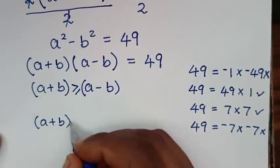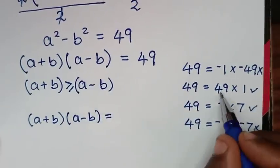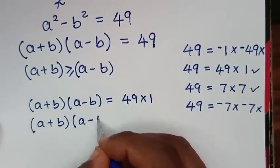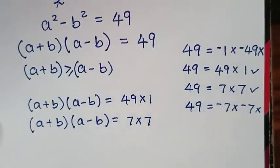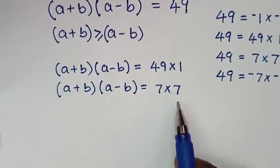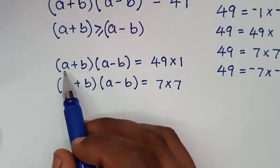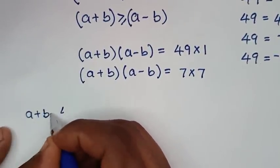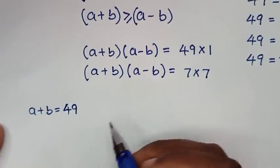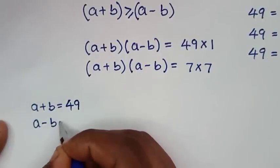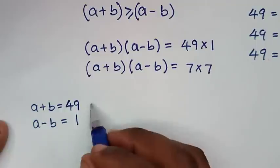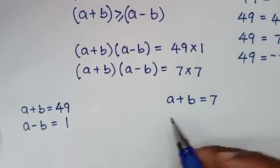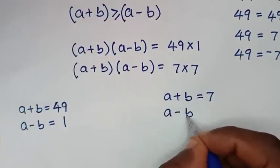So we have two solutions. For the first solution: (a + b)(a − b) = 49 × 1, giving us the system a + b = 49 and a − b = 1. For the second solution: (a + b)(a − b) = 7 × 7, giving us a + b = 7 and a − b = 7.